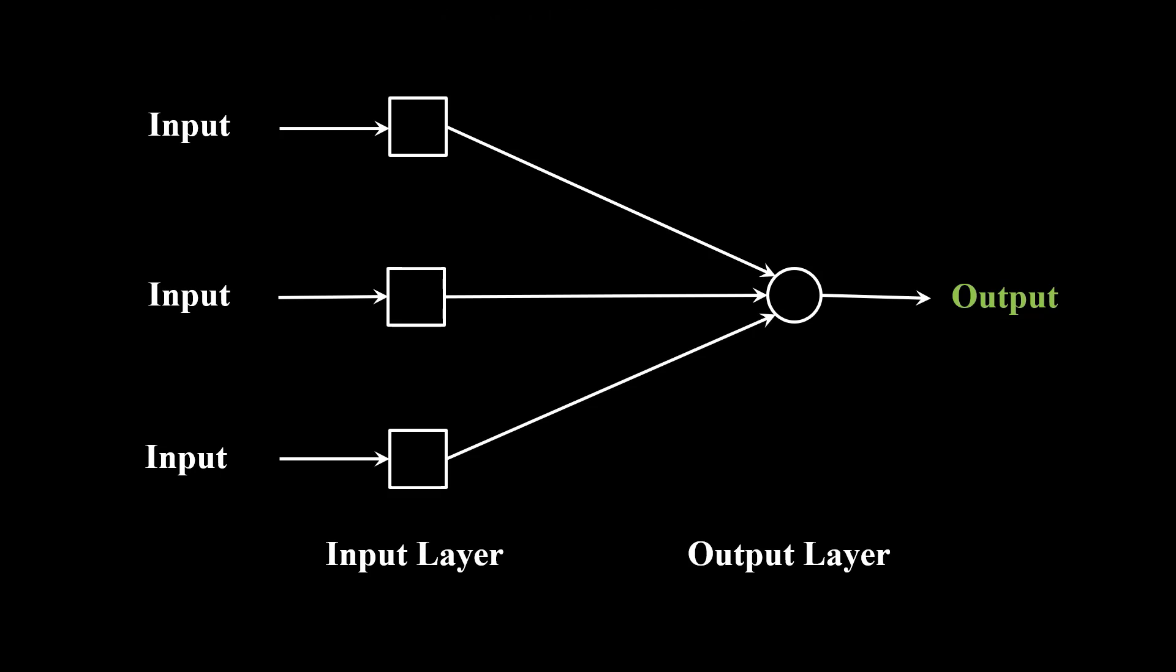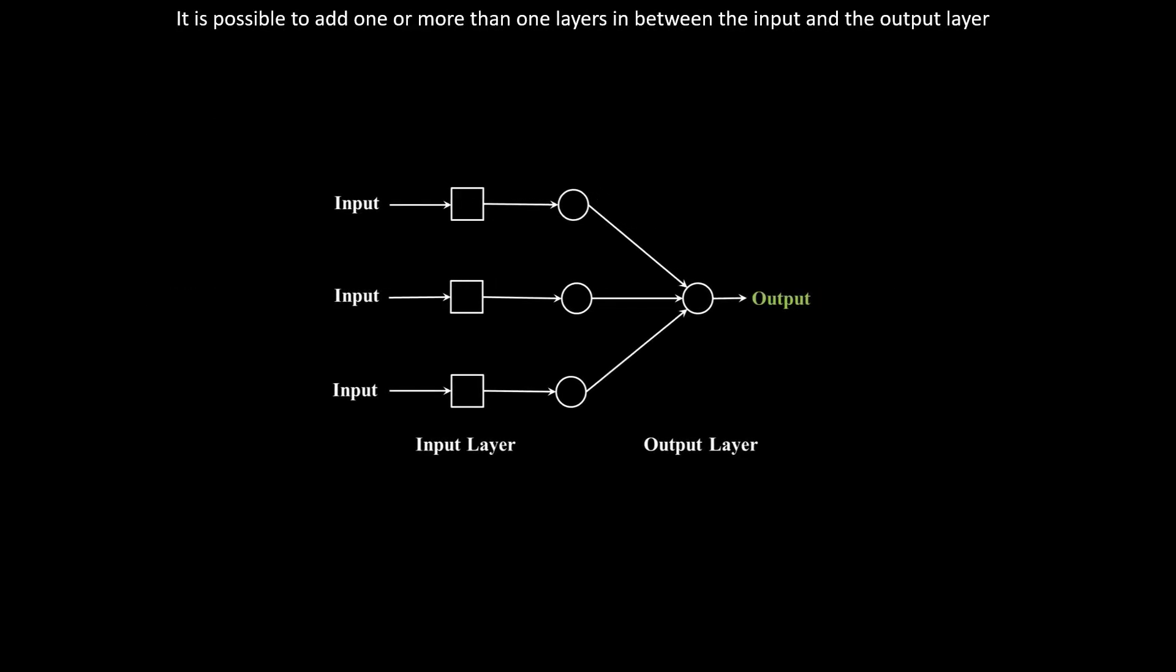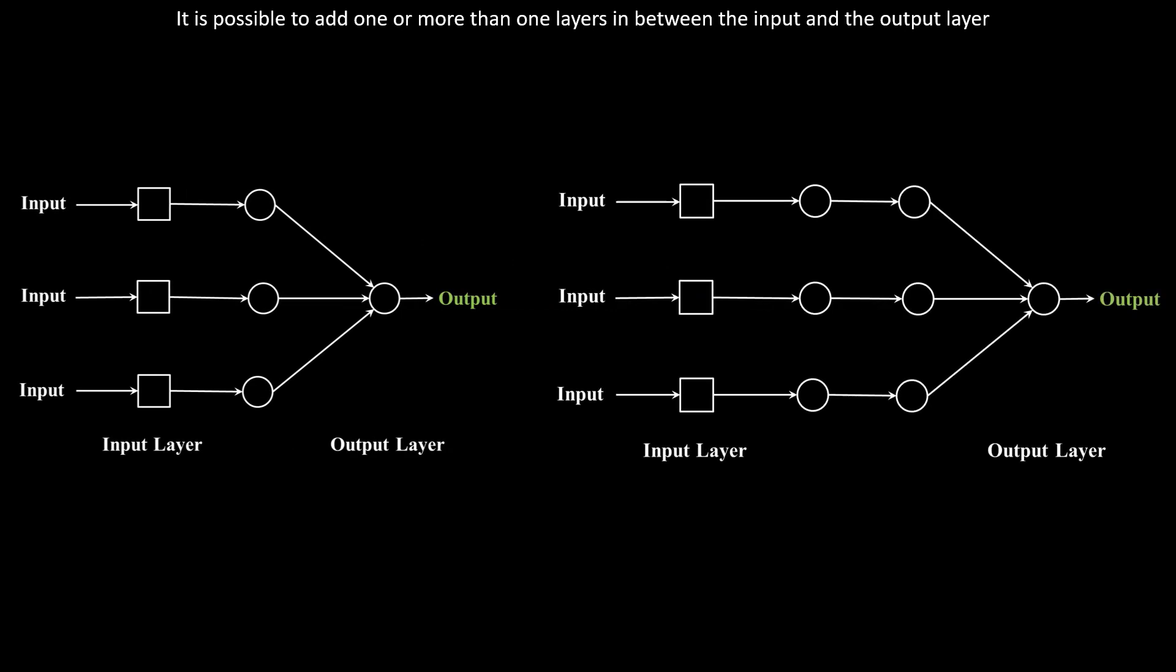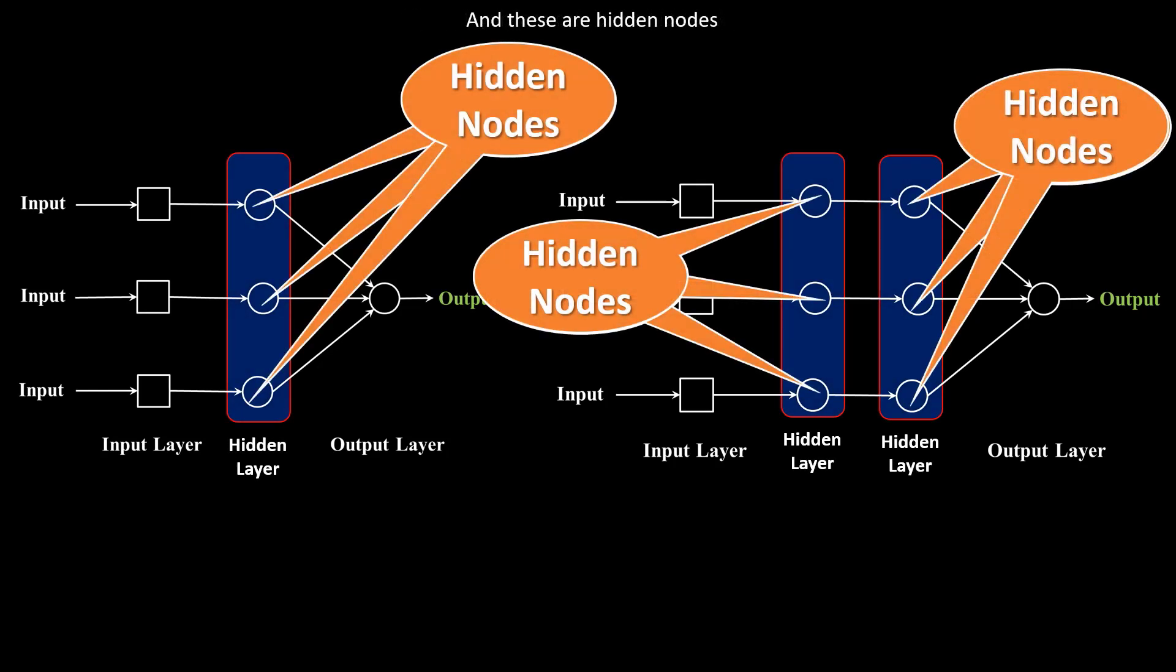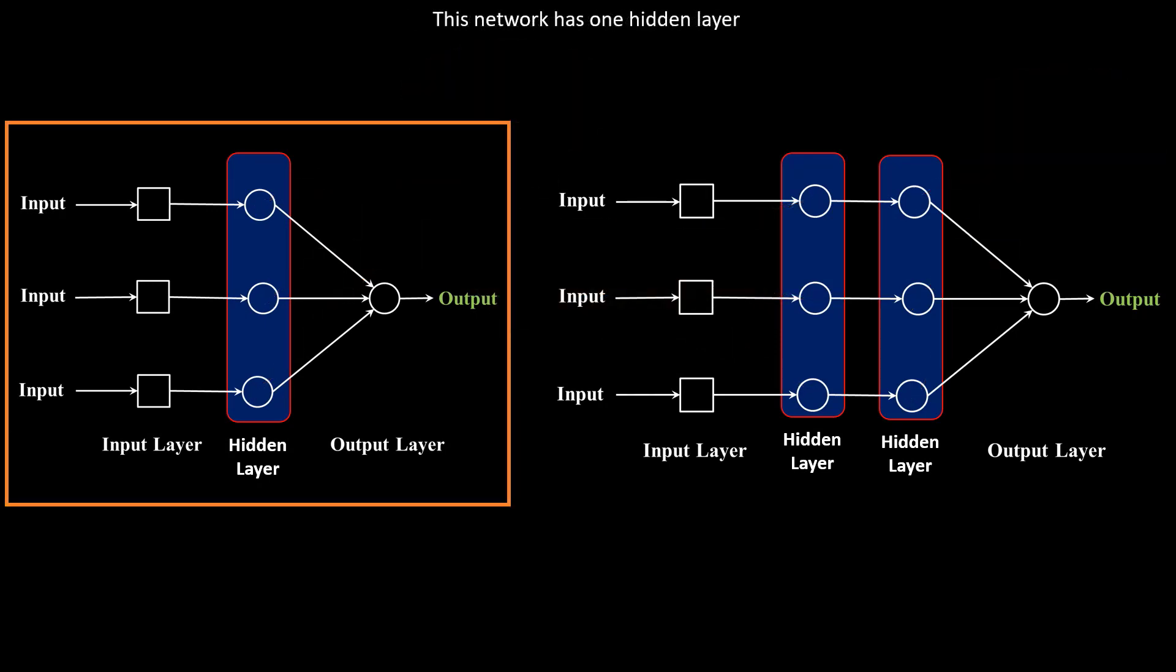It is possible to add one or more than one layers in between the input and the output layer. It becomes a multi-layer neural network. These layers are called hidden layers, and these are hidden nodes. This network has one hidden layer.